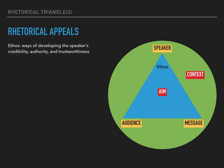The second kind of rhetorical appeal is pathos, and this appeal is most directly tied to audience. You may have heard that pathos is about emotions, and it absolutely is, but it's more than just emotions. Pathos is about appealing either to the emotions or the values or the morals of the audience. We'll talk more about those different categories of pathos in a second.